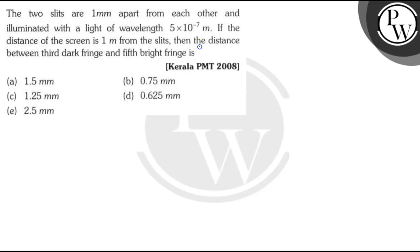Hello! Let us see this question. The question says the two slits are 1 mm apart from each other and illuminated with light of wavelength 5 × 10⁻⁷ meter. If the distance of the screen is 1 meter from the slit, then the distance between the third dark fringe and fifth bright fringe is — options are: a) 1.5 mm, b) 0.75 mm, c) 1.25 mm, d) 0.625 mm, and e) 2.5 mm.